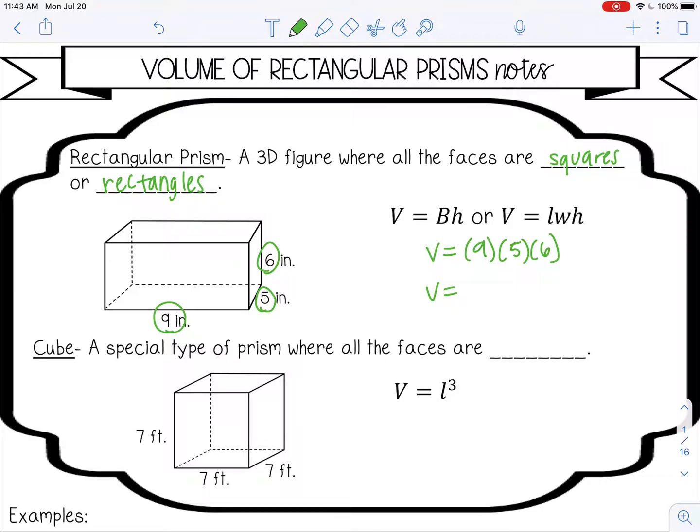We just multiply the three dimensions together and we're going to get 270 inches cubed because it's a three-dimensional shape. So it's going to be inches cubed.